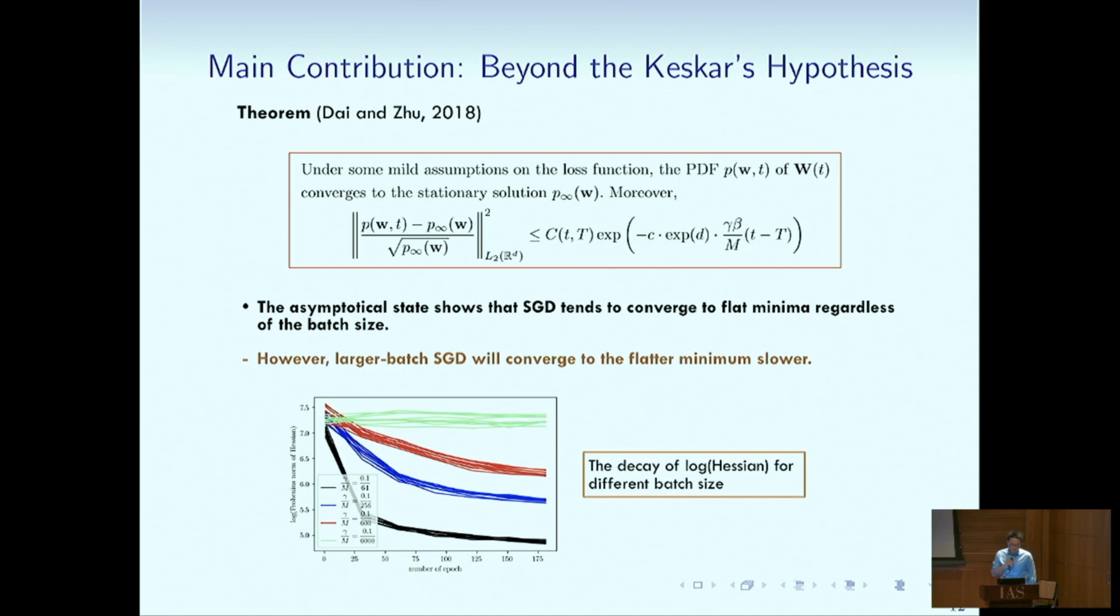From the finite time point of view, if we truncate that at a finite time, we can see most of the larger batch are stuck at a sharp minimum because it's converted to flat minimum much slower.